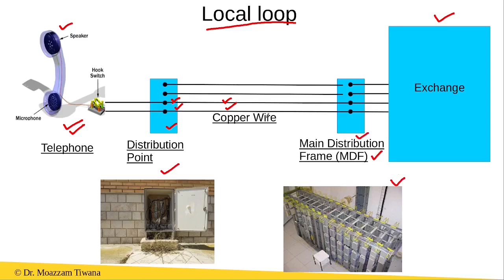The advantage of using this arrangement is that, for example, if due to some reason this pair of copper wires gets faulty, we can easily connect this telephone to another pair of copper wires in the cable. And on the exchange side, we can patch this pair of cables to the MDF port so that it is connected to the exchange. This arrangement provides the flexibility that if there is a fault in a pair of copper wires, we can change that pair with another pair that does not have the problem.